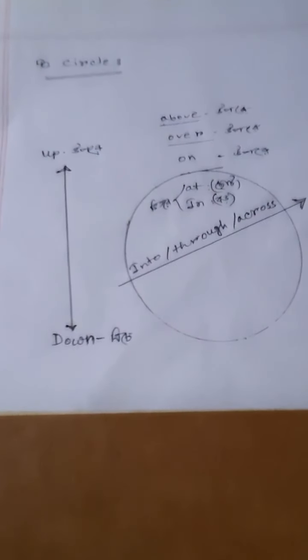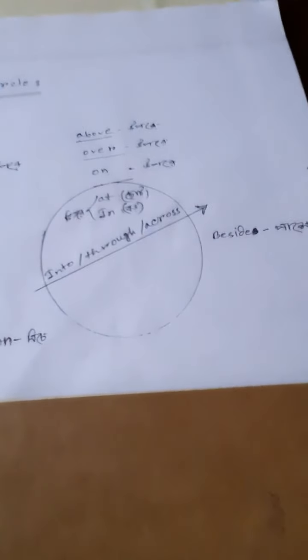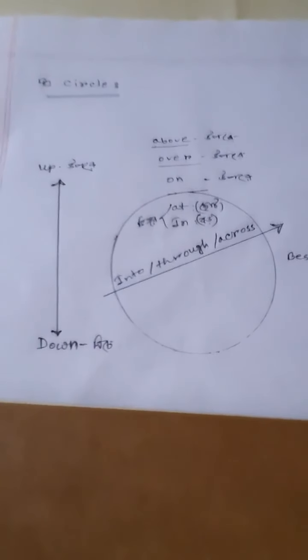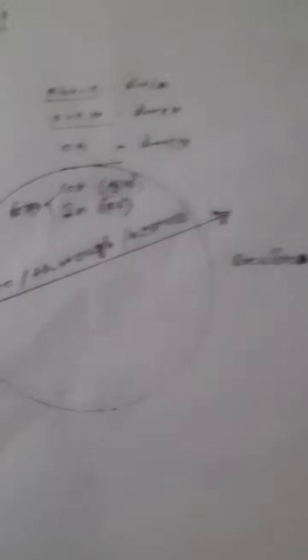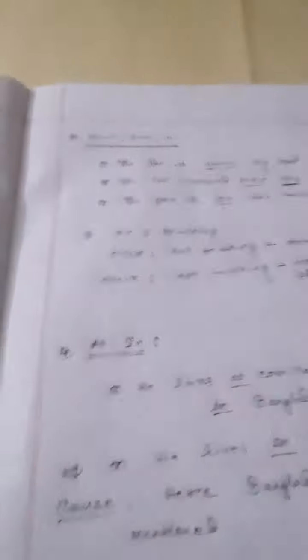In the left side of the circle you can see up and down, and in the right side you can see 'beside.' I have already mentioned the meanings in Bengali in this picture. Now I am discussing these words: above, over, on — outside of the circle. The meaning of these three words is the same, but these three words are used in different places.